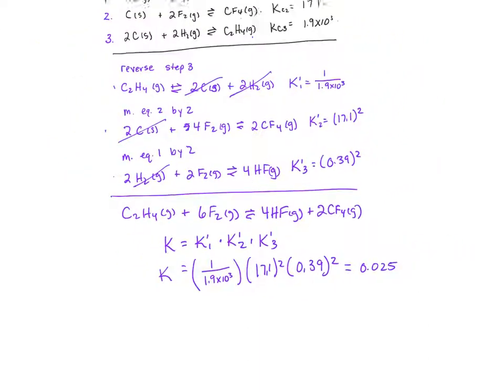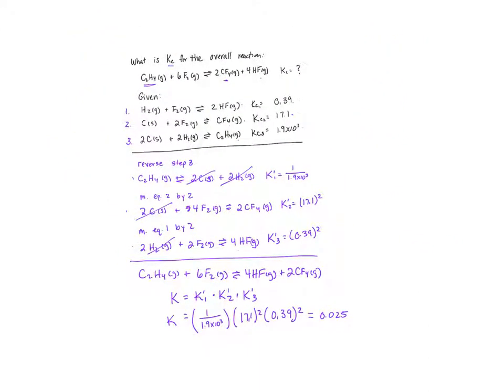So the approach on this problem is to figure out what you need to do to the different steps to get the overall equation, and then manipulate K in the appropriate way to come up with the overall value of K.